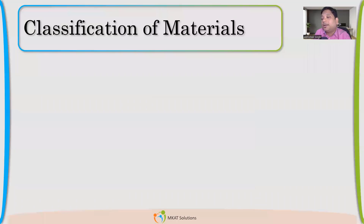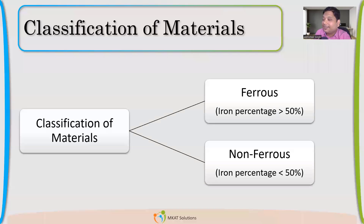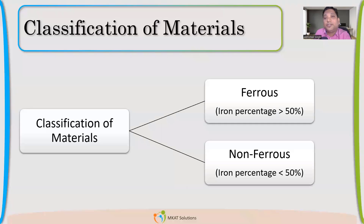Now, the most important part: classification of material. What are the two broad categories that we as pressure vessel design engineers follow for classification of material? The two broad categories are ferrous and non-ferrous. If you have iron percentage more than 50%, it becomes ferrous. It's like a stake — if you have more than 50% stake in a company, that company is yours.